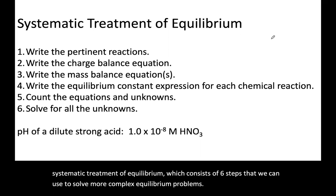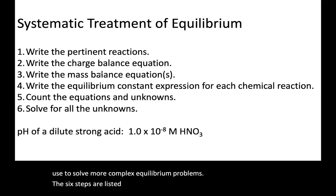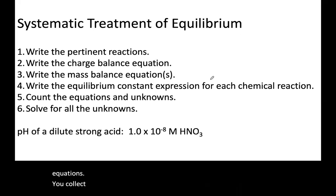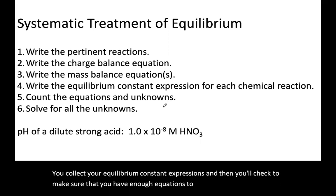The six steps are listed here. You first write any pertinent chemical reactions. You'll write charge balance equations and any mass balance equations. You'll collect your equilibrium constant expressions, and then you'll check to make sure that you have enough equations to solve for the number of unknowns that you have.